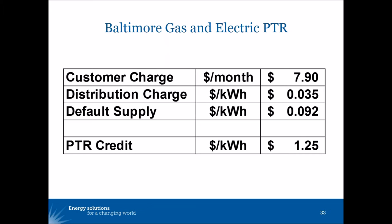Because there's essentially a no-losers design to a peak time rebate, it's easier for a utility to offer that rate to all customers as a default. That's what BG&E has done with residential customers — more than 800,000 customers are eligible for peak time rebates. In the BG&E example, these peak events last from 1 to 7 p.m. on the days when they happen. The utility decides when those events are the day ahead, and then notifies customers by text, email, or phone.